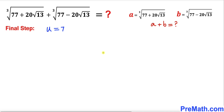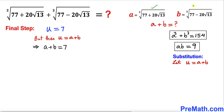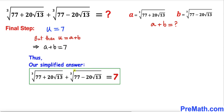Here's our final step. We know our only solution is u equals 7, and since u was equal to a plus b, we conclude that a plus b equals 7, where a is the first cube root and b is the second cube root. So our simplified answer to this radical problem turns out to be 7. Thanks for watching and please don't forget to subscribe to my channel for more exciting videos.